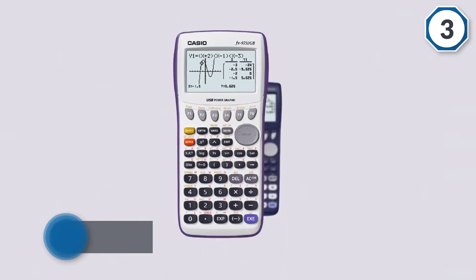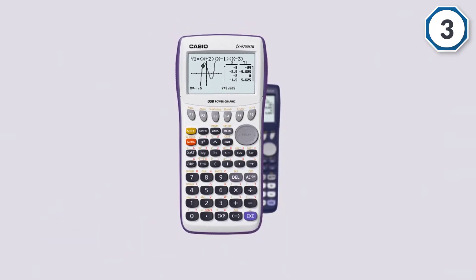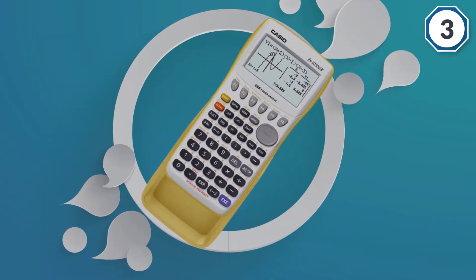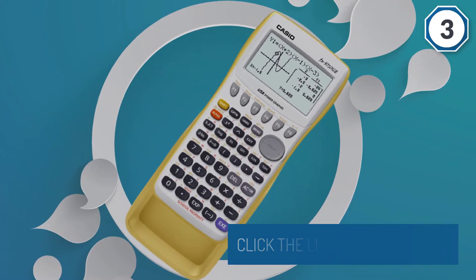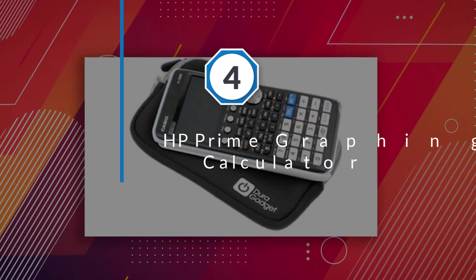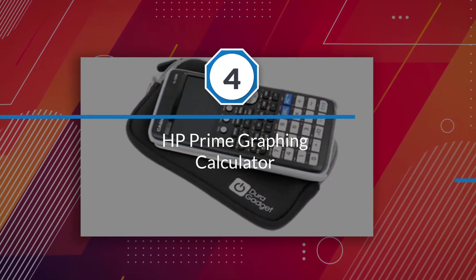The FX-9750GII requires four AAA batteries and includes built-in USB functionality for connecting with other devices. Number four: HP Prime Graphing Calculator.